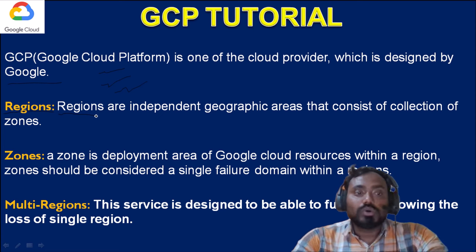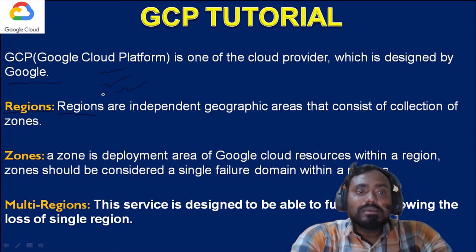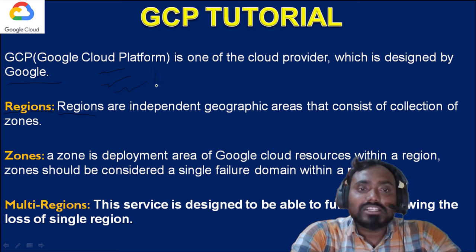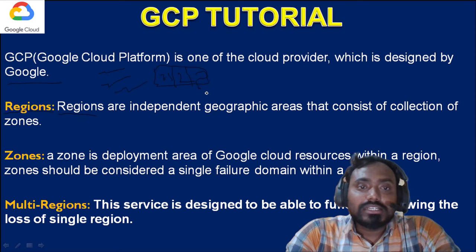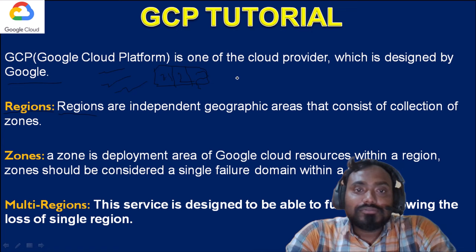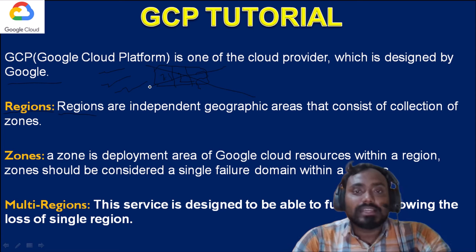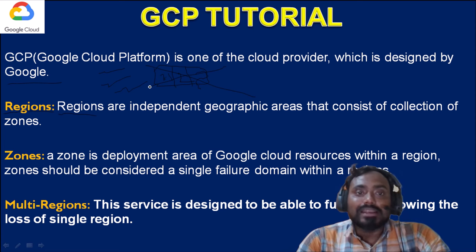A region is a physical storage location where the actual data will be stored, and zones are subcategories under that region. We have zone one, zone two, and zone three — three zones in each location, except the Iowa region. If your complete region goes down, you will not be able to process anything and your complete package will be down.